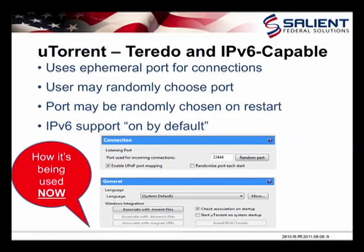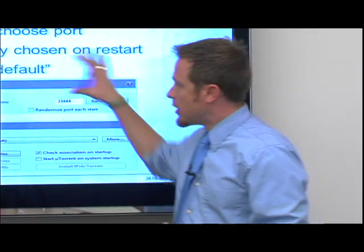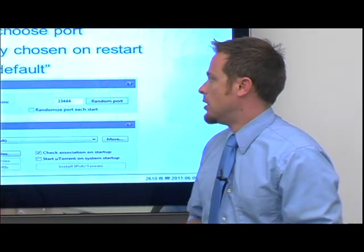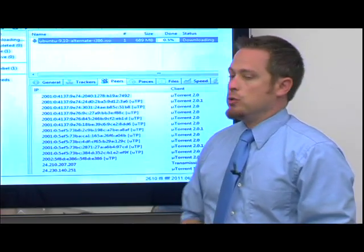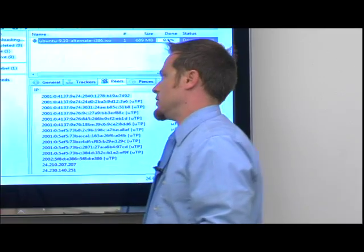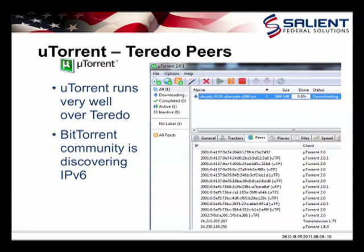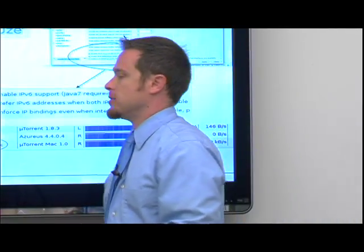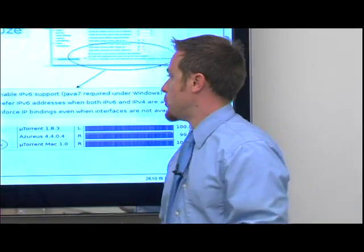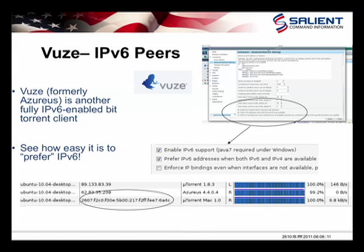A good real-world example is Teredo being used at home: users running uTorrent or any BitTorrent client to tunnel whatever they're downloading — music, movies — over IPv6, which is in turn tunneled over IPv4. This is very easy to use because it's on by default with recent versions of uTorrent. When a user starts to download a file, you can see a listing of clients using IPv6 via Teredo using the 2001::/32 prefix. Another client called Vuze does the same thing, letting you simply check a box to enable IPv6 support and prefer IPv6 addresses when both are available.